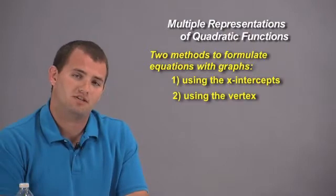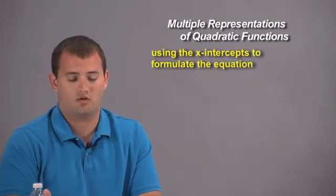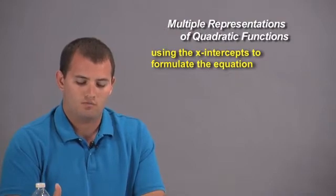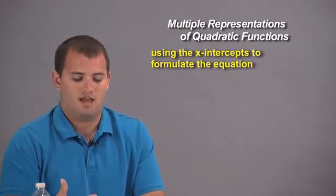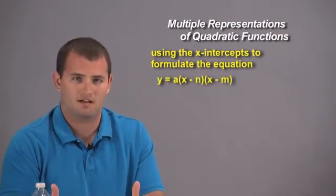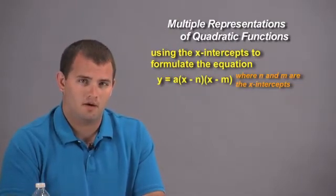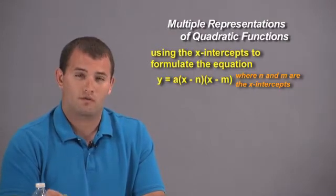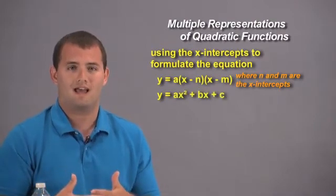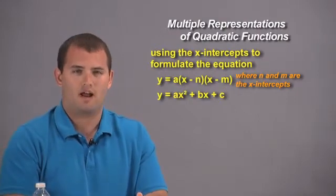Each method has its advantages and disadvantages. We'll discuss these later. First, we'll use the x-intercept method to formulate the equation. When we factor a quadratic equation, we find the x-intercepts and it takes the form y equals a times the quantity (x minus n) times the quantity (x minus m), where n and m are the x-intercepts. We're going to work in reverse here, multiply the two binomials, and work toward the form y equals ax² plus bx plus c. At some point we'll need to solve for a.